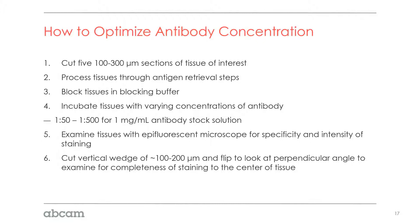As you achieve uniform labeling at 100 or 300 micron sections, move up in tissue thickness until you reach your ideal thickness. You'll reach a limit where uniform penetration cannot be achieved past a certain depth — that is the limit for that antibody — but you need to find that empirically by studying how penetration is affected by these parameters.